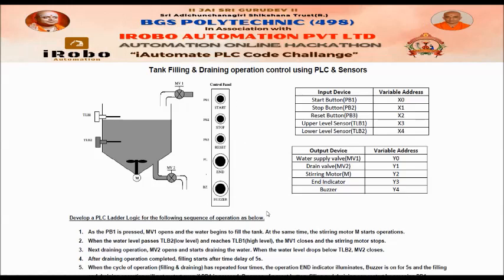Now I will explain the sequence of operation. As PB1 (start button) is pressed, MV1 opens, meaning filling starts, and water begins to fill the tank. The low level sensor TLB2 will turn on first as the water rises, and then the high level sensor TLB1 will turn on. At the same time as PB1 is pressed, the stirring motor M also starts operation.